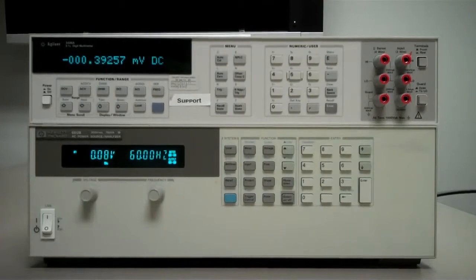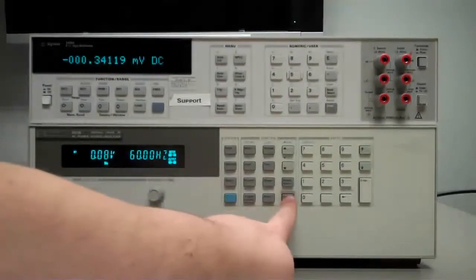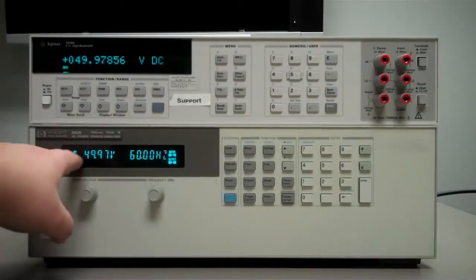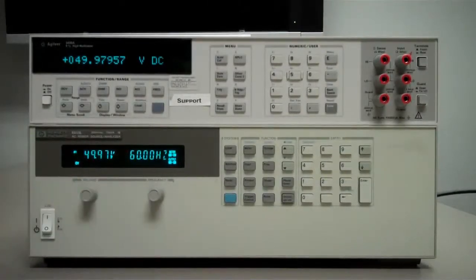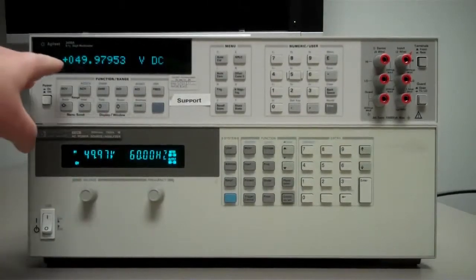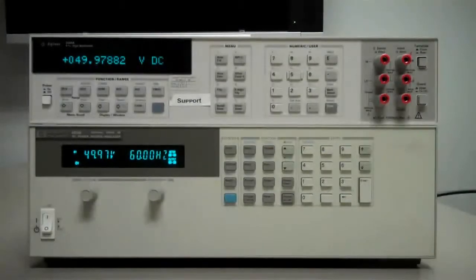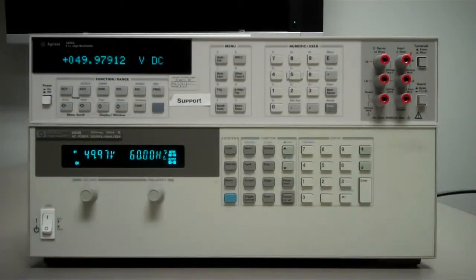Finally to enable the output, we're going to hit this output on-off key here. You can see the output is on and the AC source is measuring 50 volts. If you look up to the 3458A, that's also measuring right around 50 volts. It's a bit less, but it's within the programming accuracy specification of the DC voltage on this power supply.